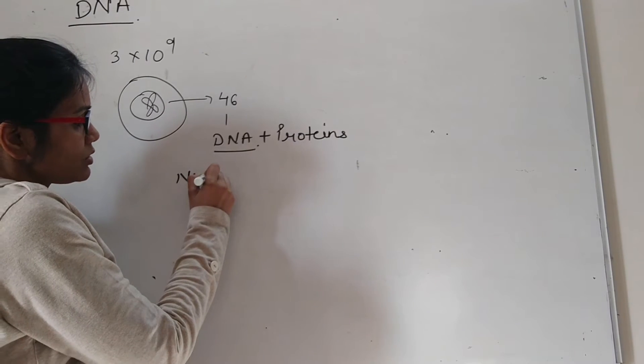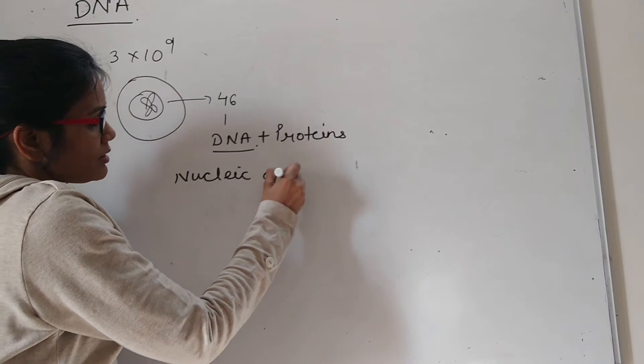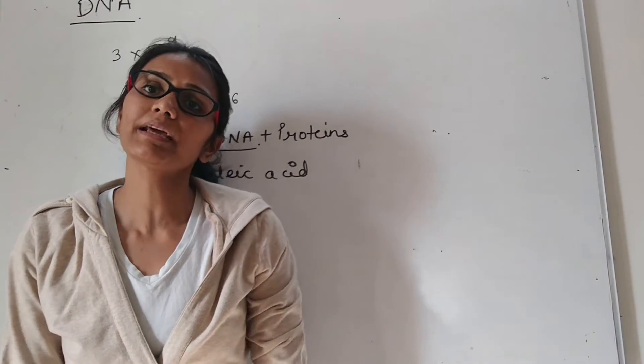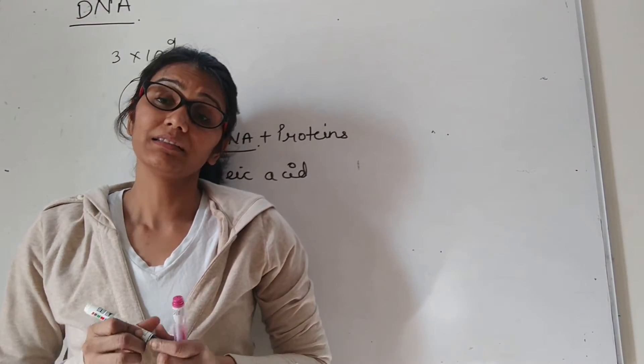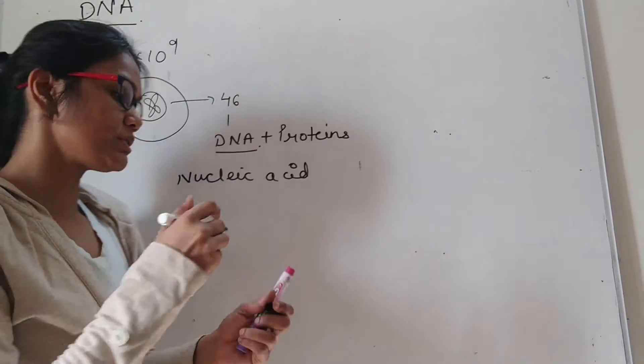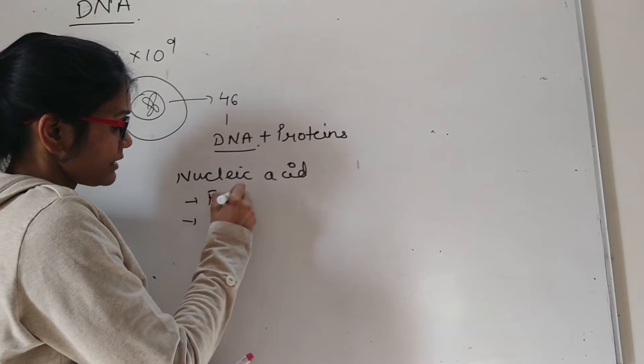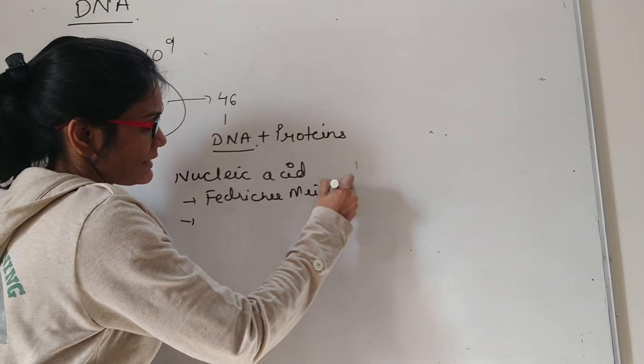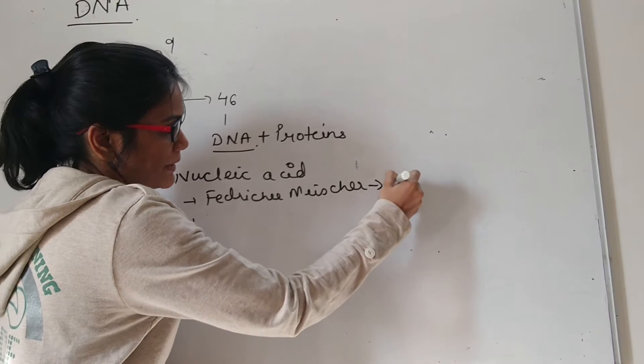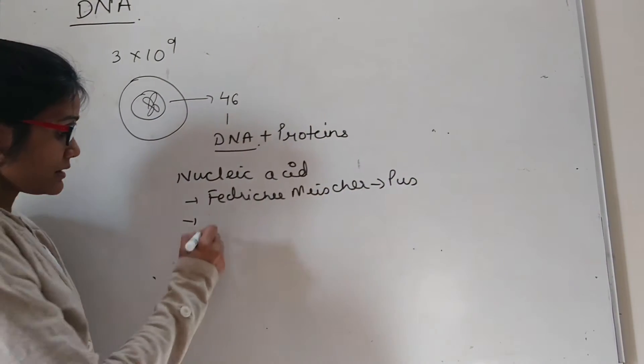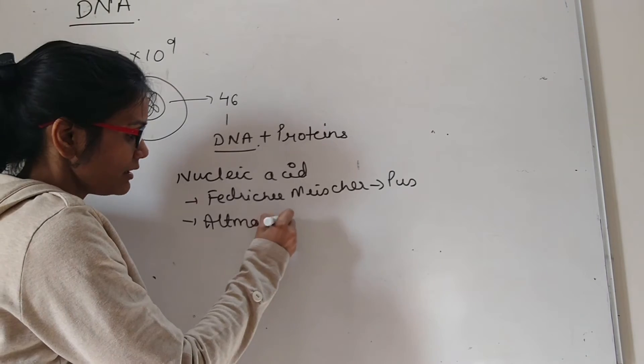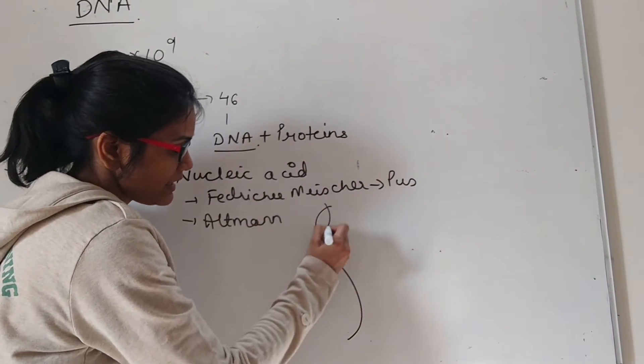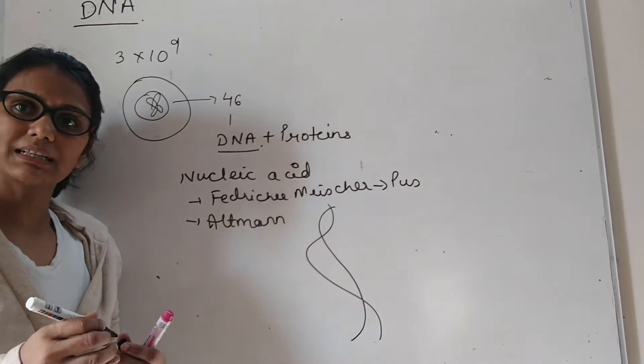The first nucleic acid was discovered by scientist Friedrich Miescher, and the term nucleic acid was coined by Altmann. Friedrich Miescher was the scientist who discovered them in the pus cells, and the scientist who coined the term nucleic acid was Altmann. And this famous double helical structure of DNA was given by Watson and Crick.